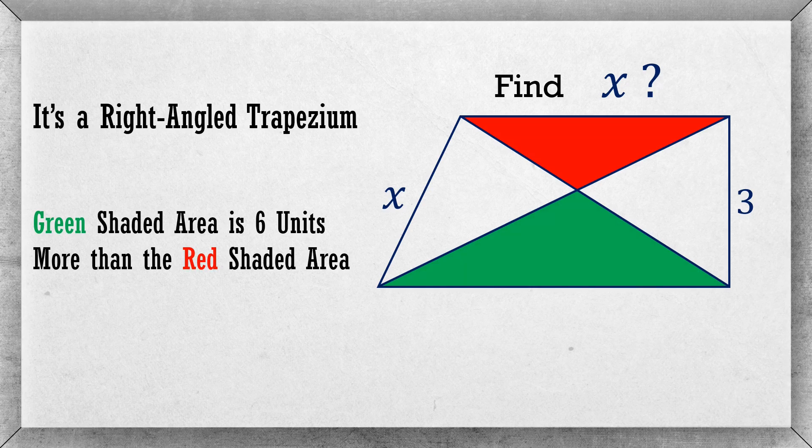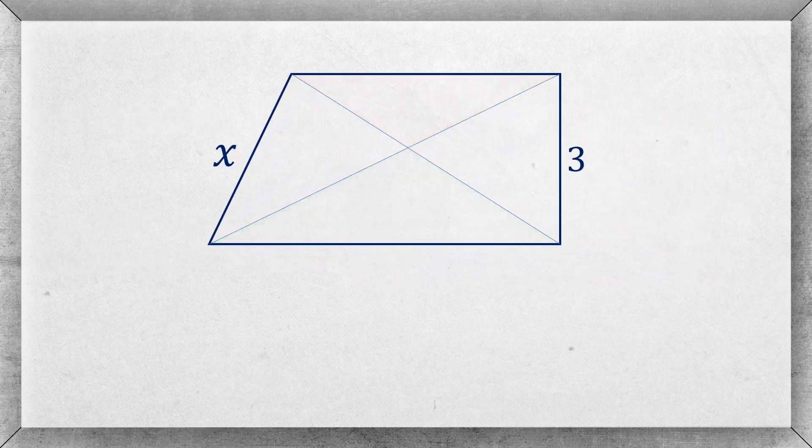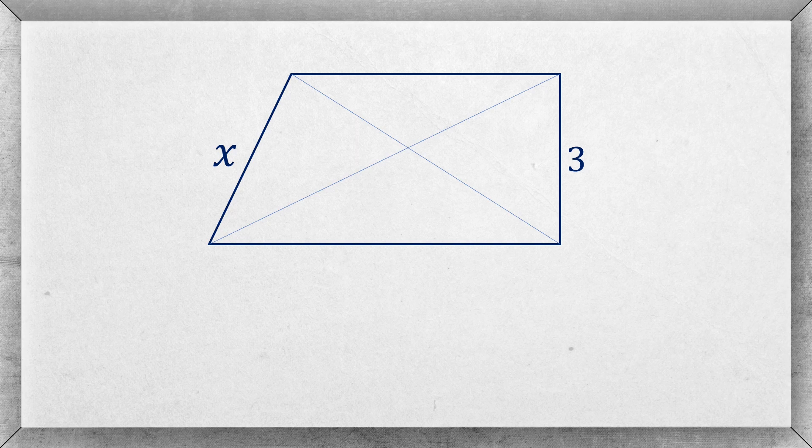Today our problem is to find x from a given right angle trapezium. The information provided is that the green shaded area is 6 units more than the red shaded area. First, we name the vertices of the trapezium as A, B, C, and D, and the intersection point of the diagonals AC and BD is O.